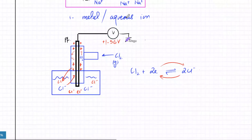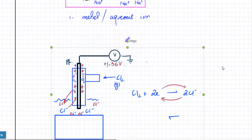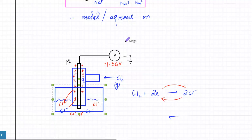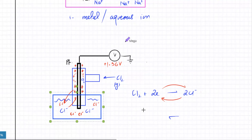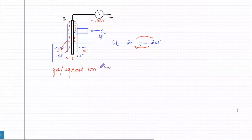Is the idea clear? This specific electrode we drew is a gas plus aqueous electrode. Whenever you have a gas, you have a gas jar and there's a platinum electrode. And there's a third type of electrode — what if you have aqueous ions only?